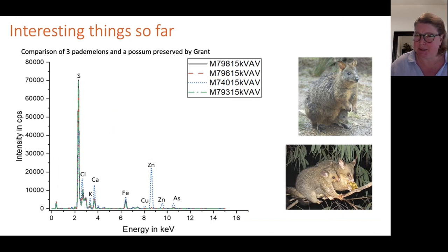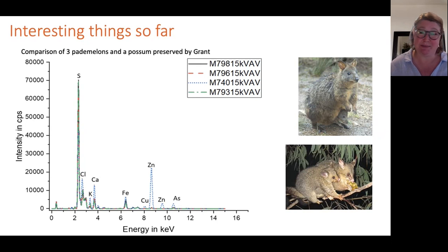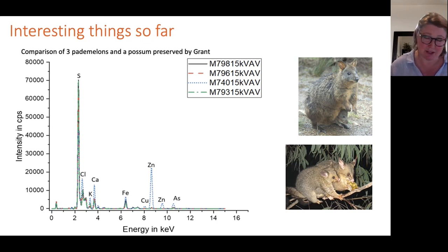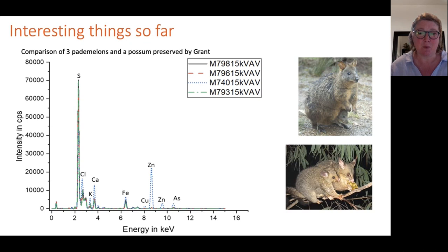However, it also appears field collectors varied their methods, perhaps due to species, size or availability of materials. Comparing three pademelons with a possum all prepared by Grant, the possum is higher in chlorine, zinc and arsenic. A note found while sifting through documentation at the McLean Museum suggests this higher concentration may be an indicator of a particular bath preservative recipe — the first rabbit hole I'll be looking into next year.